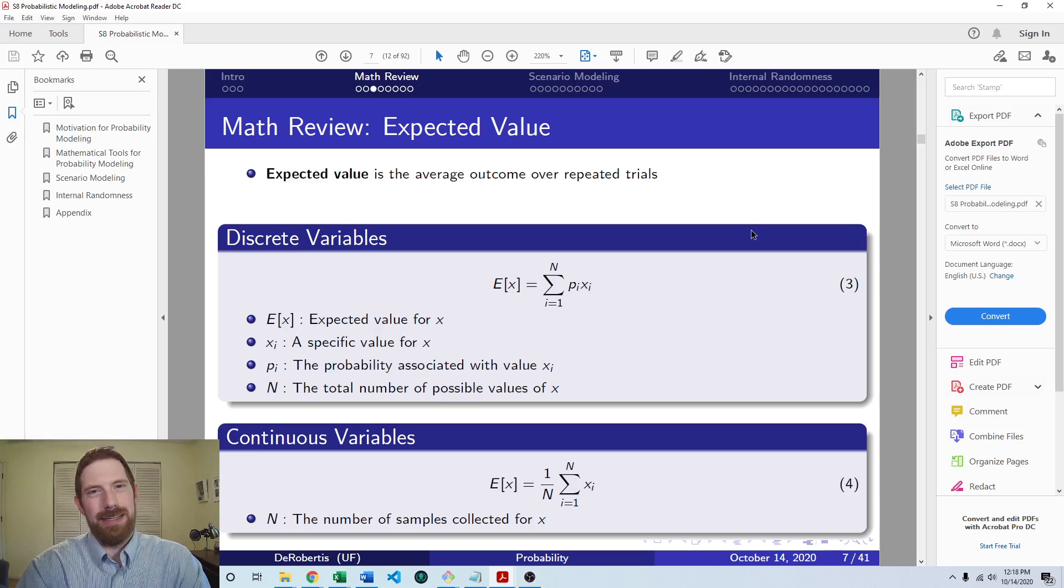Thinking about expected value. Expected value is the average outcome over repeated trials. So it's the way that we can think of the outcome that we expect to happen. If you want to be able to put what's going to happen into a single number, that's the expected value. Now it's not going to be able to capture the risk of that result at all.